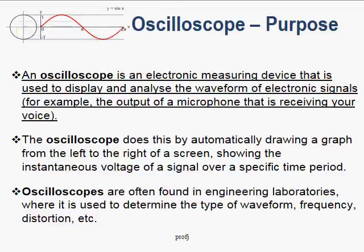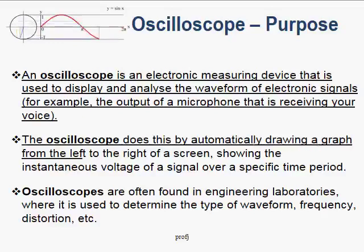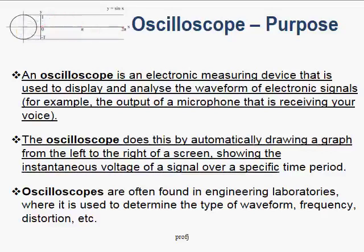The oscilloscope does this by automatically drawing a graph from the left to the right of a screen, much as the video clip on top is showing, displaying the instantaneous voltage of a signal over a specific time period.